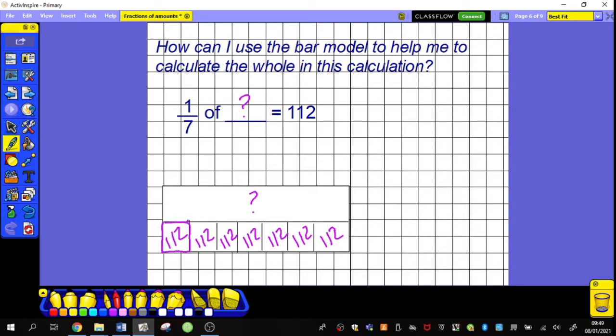Because there are seven sevens in a whole. One hundred and twelve multiplied by seven is going to give me seven hundred and eighty four. Oh, I need the eraser. My whole must be seven hundred and eighty four.